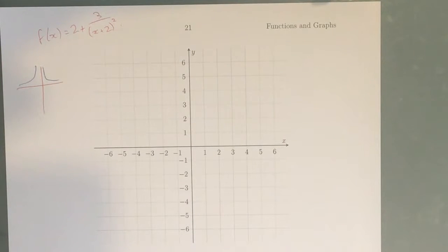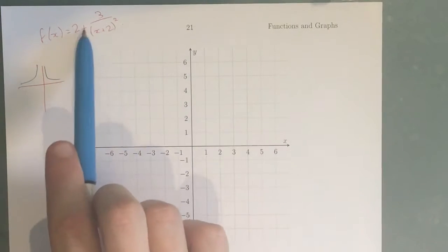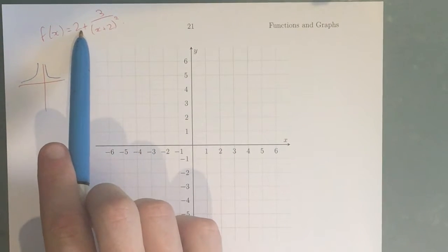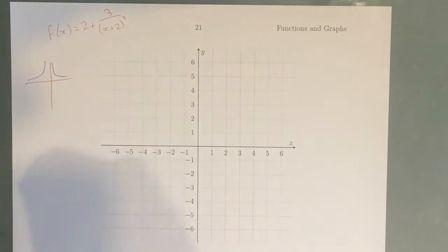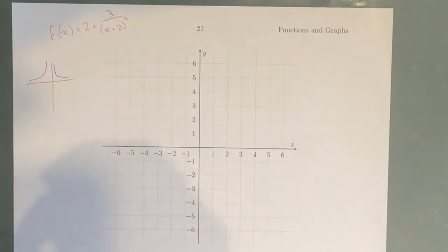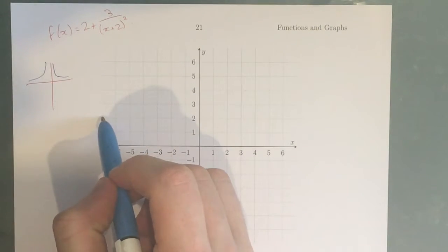First things first, I like to take care of my asymptotes first because they're quite easy to see. Whatever your constant is on the end, usually it's on the end, but it's just whatever number is by itself, that's your horizontal asymptote. So because this is a 2, our horizontal asymptote is actually at y equals 2.